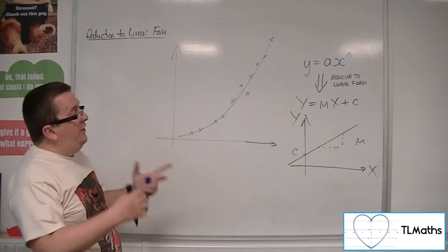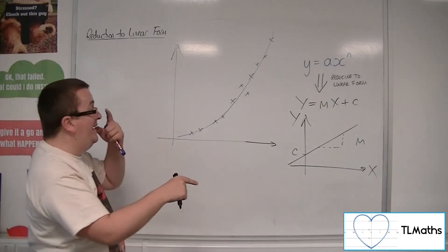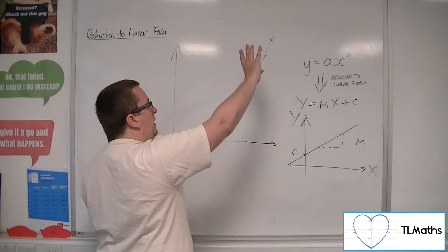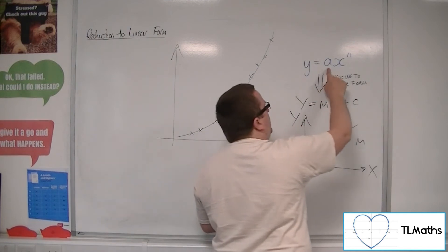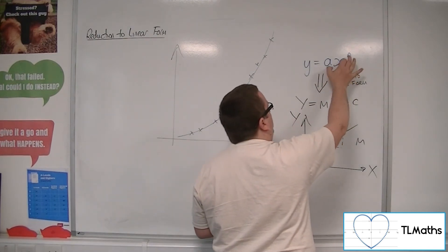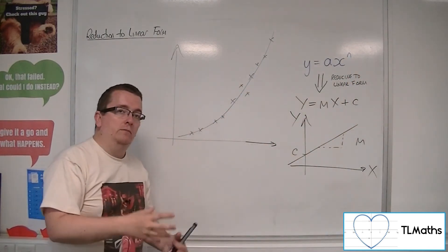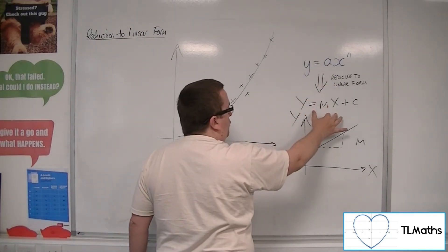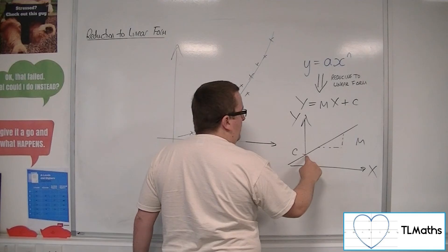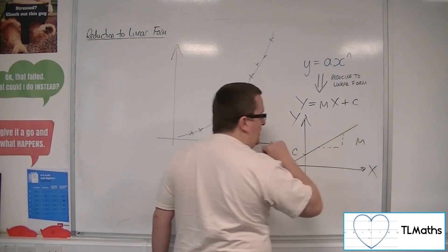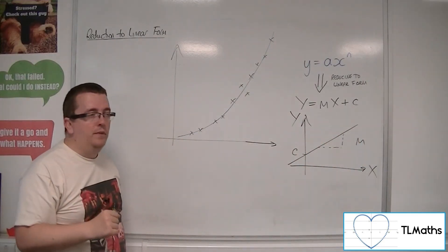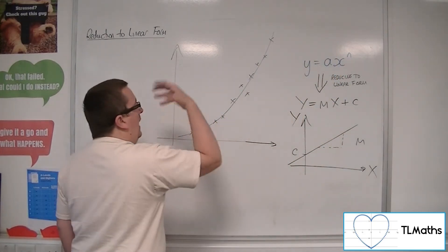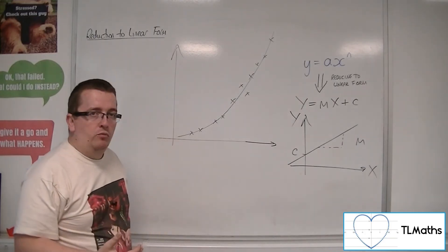So this is the concept of reducing to linear form. It's because we've got this data, we think this curve will attach to it, but the curve in question has unknowns, and we need to figure those out. Now, easiest way to do that is to reduce it to this linear form, estimate the value of c and m based on the data that I have, and then I can work backwards to get a and n and then solve the required problem.